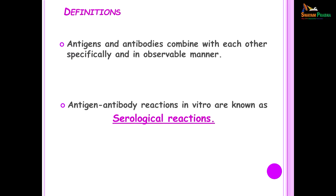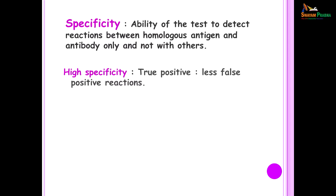Let us move on to some definitions. Antigens and antibodies when they combine with each other specifically and in an observable manner — these types of reactions are called antigen-antibody reactions, and the ones which are conducted in vitro, that is outside the body, are referred to as serological reactions. Another terminology you will come across is specificity: the ability of a test to detect reactions between homologous antigen and antibody only, and not with others.